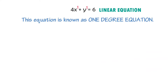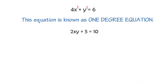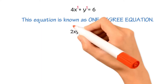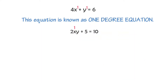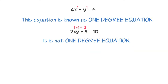Let me give you another example: 2xy plus 5 is equal to 10. This equation also has three terms: 2xy, 5, and 10. The term 2xy is considered as one term. The power of x is 1 and the power of y is also 1. Hence, 1 plus 1 equals 2, so the highest power of this equation is 2. Therefore, it is not a one-degree equation and hence not a linear equation.